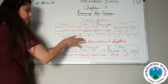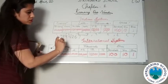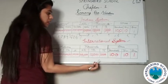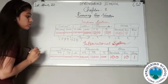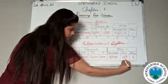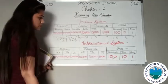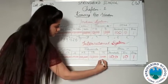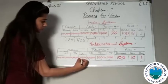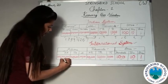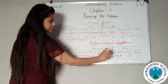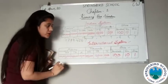Now comes the international system. In the international system, in each head there will be three places. First is the ones head: ones place, tens place, hundreds place. Second head is thousands: thousands, ten thousands, hundred thousands. Then comes the million head: million, ten million, and hundred million. Like the Indian system, the ones head is similar, but the other heads are not similar.